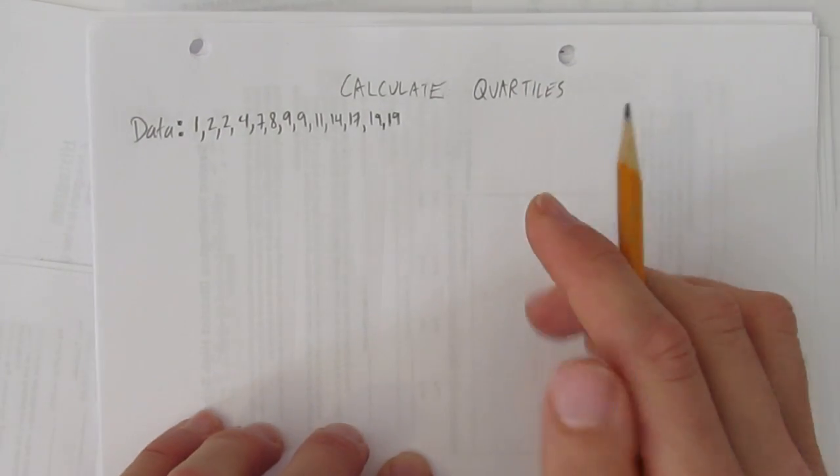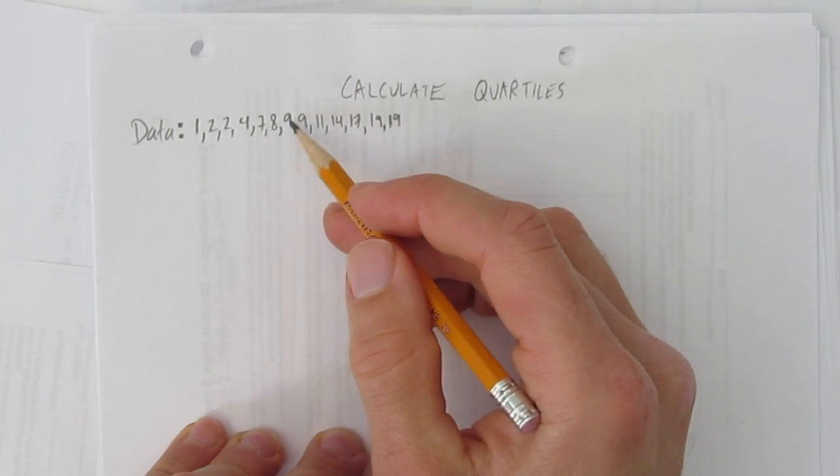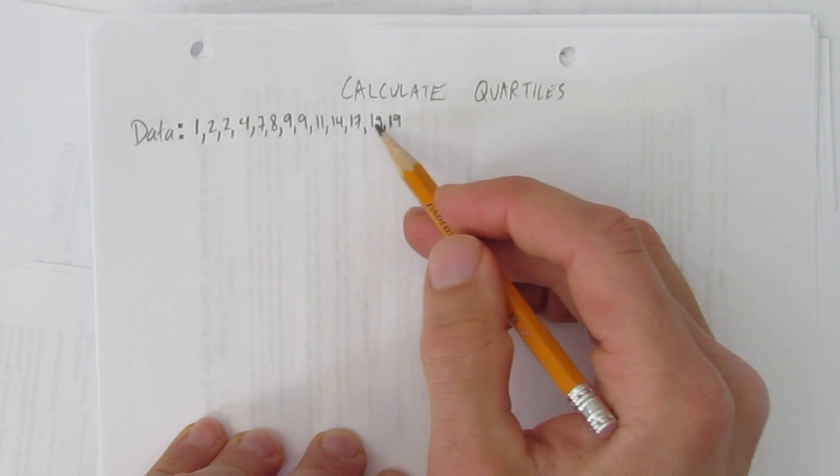So first let's begin by looking at our data. We have 1, 2, 3, 4, 5, 6, 7, 9, 10, 11, 12, 13 things.